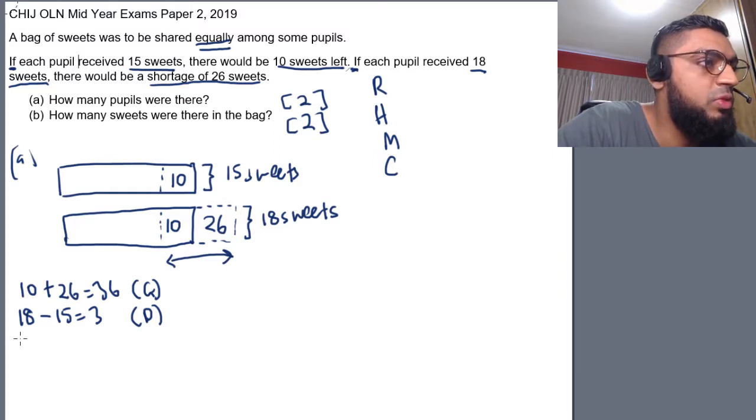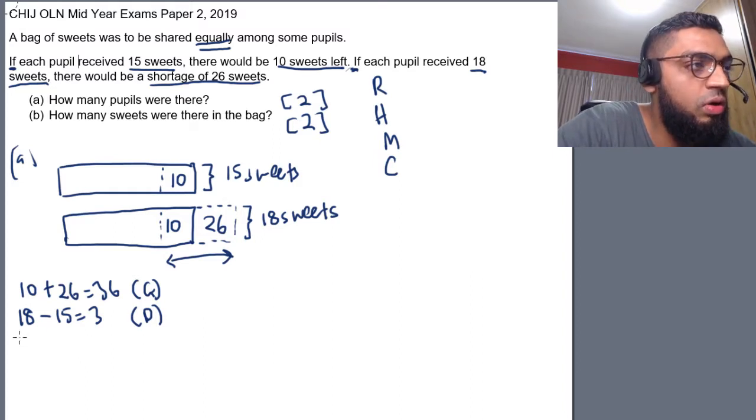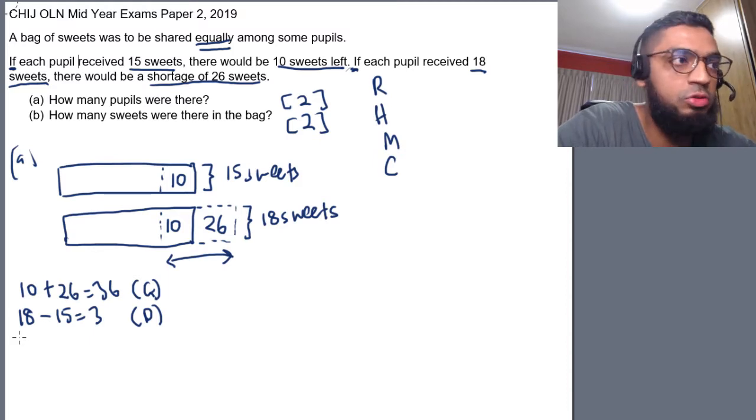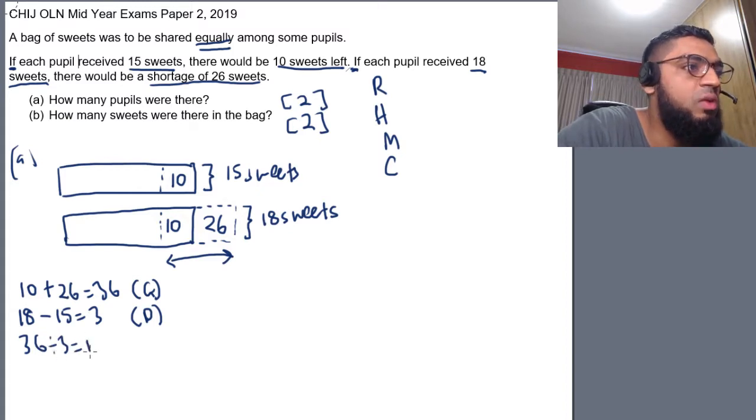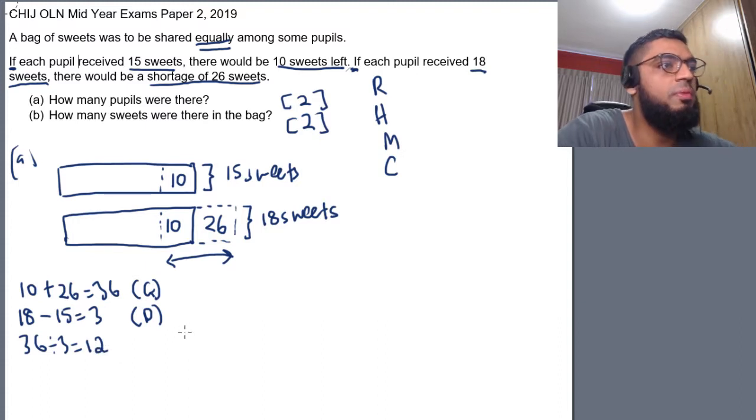And the last step to find the number of pupils or a number of adults or number of students, all we have to do is take 36 divided by 3. The gap divided by the difference. And we will get the answer of 12. And this is the answer for the number of pupils. 12 pupils.